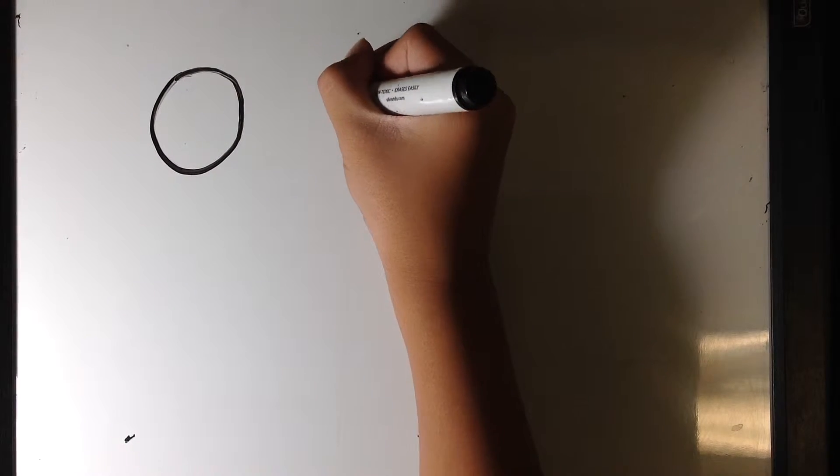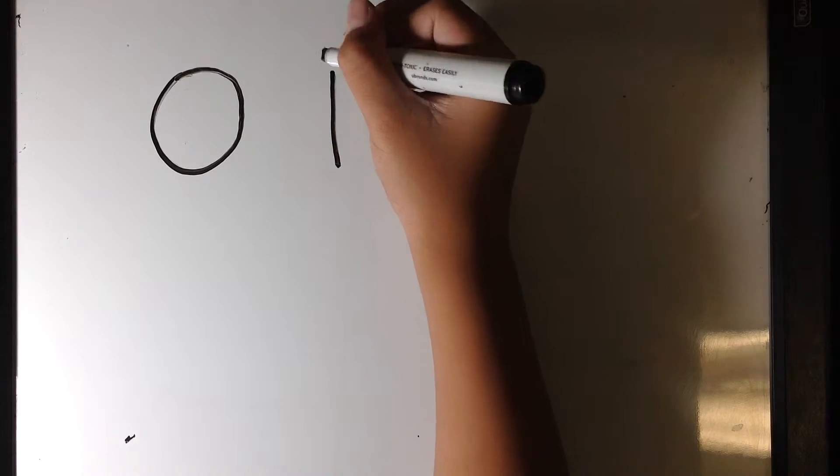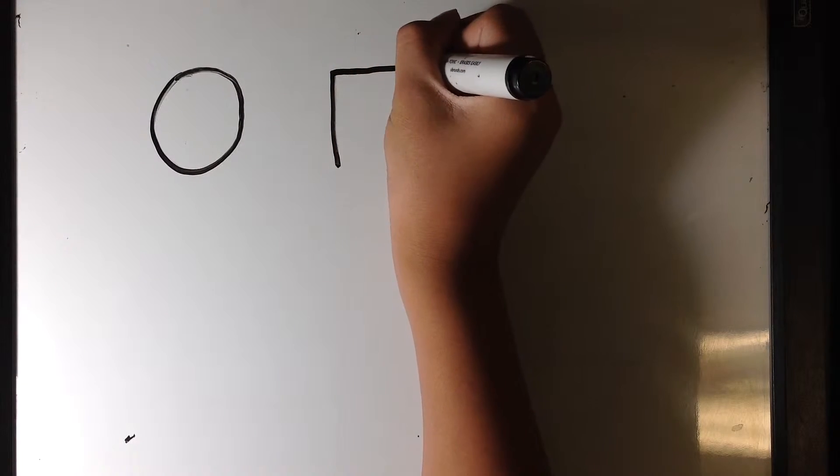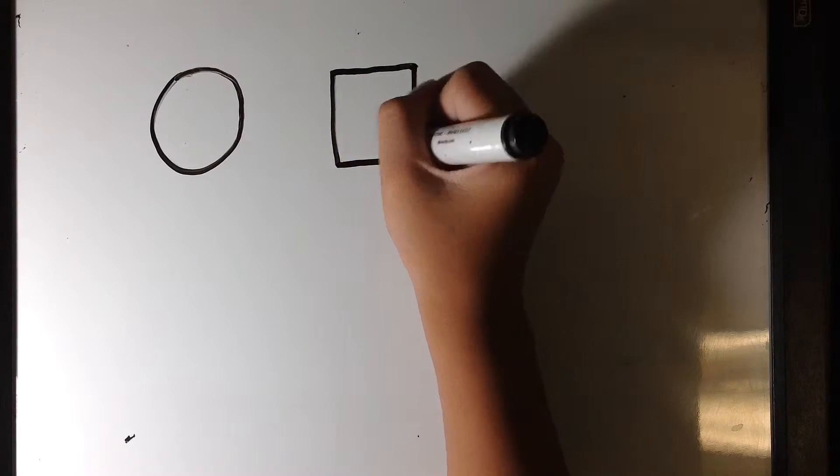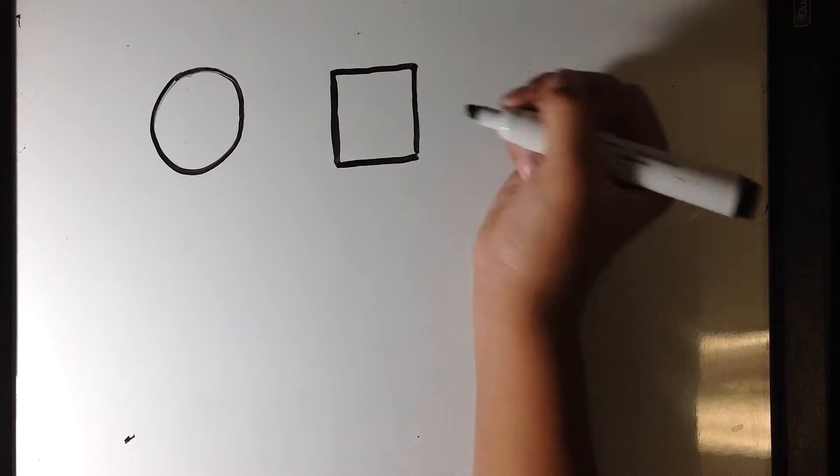Now I'm going to be teaching how to draw a square. First you do one line on the left, one line on top, one line, and then another line. And all of these lines have to be even.